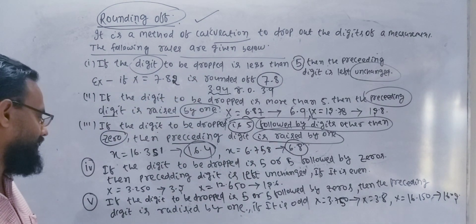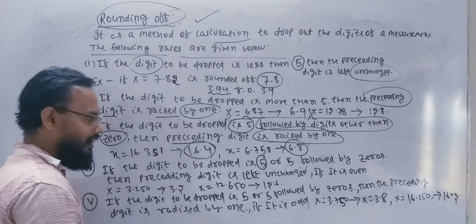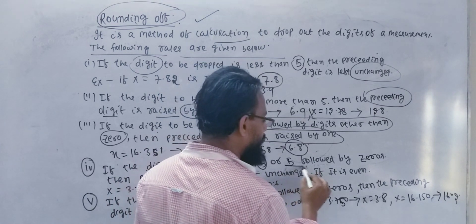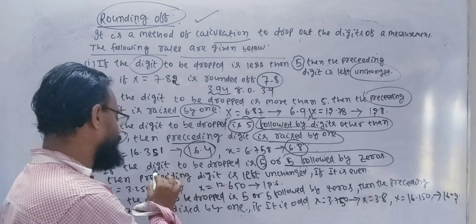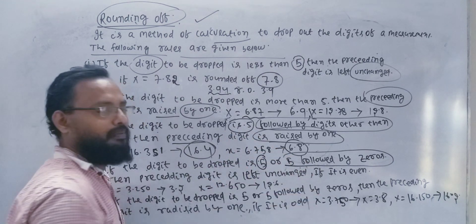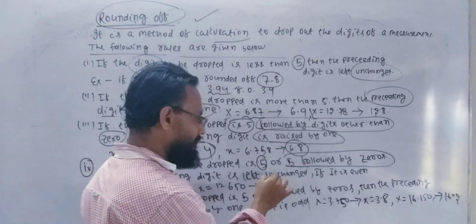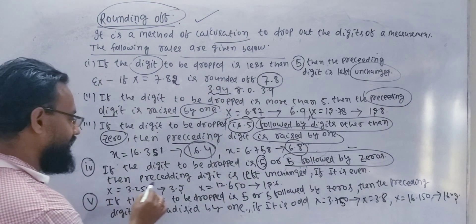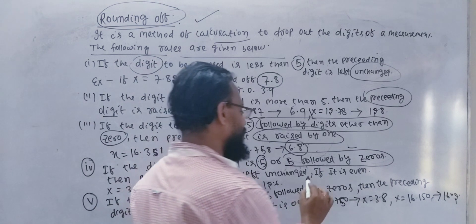Rule 3: If the digit to be dropped is exactly 5, or 5 followed by zeros, then the preceding digit is left unchanged if it is even. If the preceding digit is even, it remains unchanged when dropping a 5 or 5 followed by zeros.